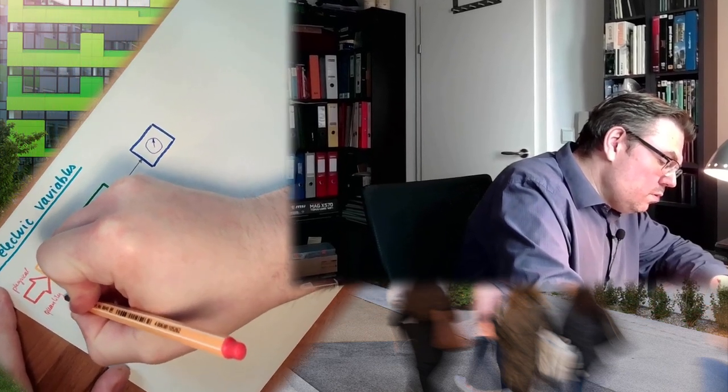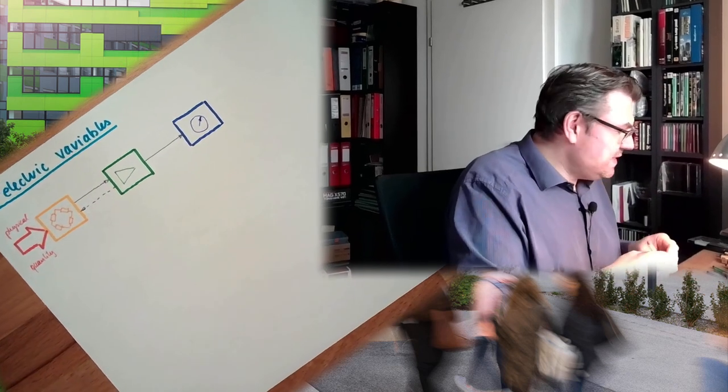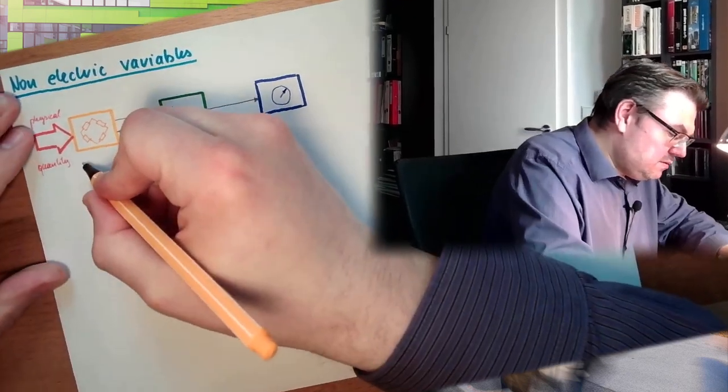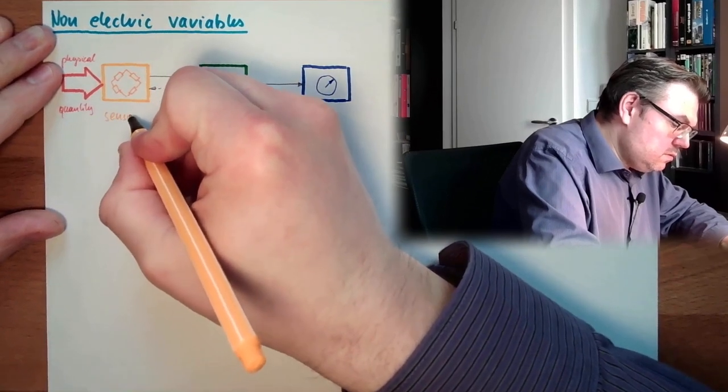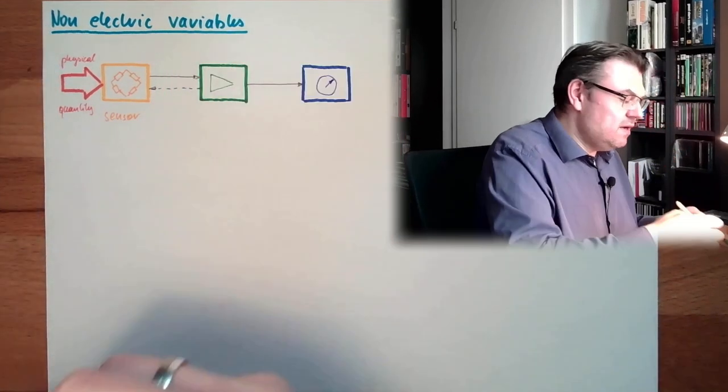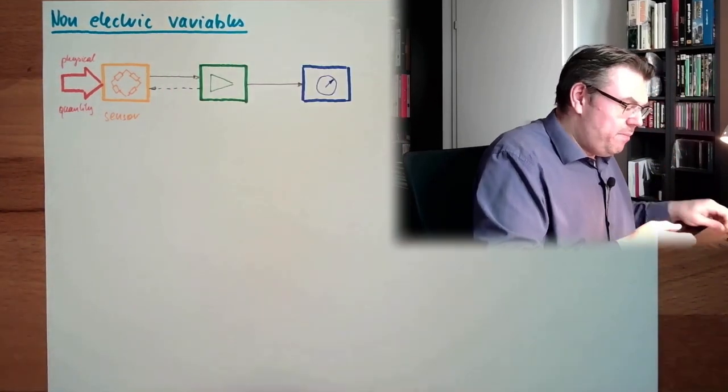Let's think about what we learned about the measurement chain. So there is some physical quantity which is influencing a sensor. Here we have the sensor. The signal of the sensor is gained by an amplifier.